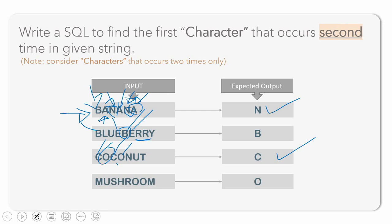Let us take one more example: 'mushroom'. Here is the first occurrence of M and the second occurrence of M. However, before the second occurrence of M, we have the second occurrence of O. So we need to print the character whose second occurrence comes first. One important rule: the character should occur only two times. If a character occurs more than two times or less than two times, we exclude it. For example, in 'banana', A occurs three times, so we do not consider it — we only consider characters that occur exactly two times.